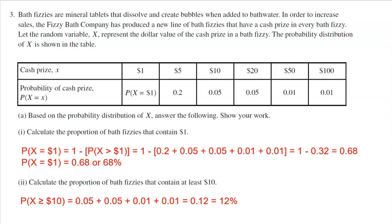Bath fizzies are mineral tablets that dissolve and create bubbles when added to bathwater. In order to increase sales, the Fizzy Bath Company has produced a new line of bath fizzies that have cash prizes in every bath fizzy. Let the random variable X represent the dollar value of the cash prize in a bath fizzy. The probability distribution of X is shown in the table below.